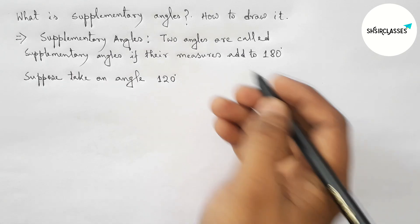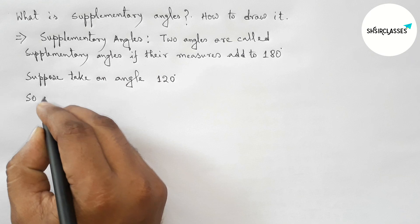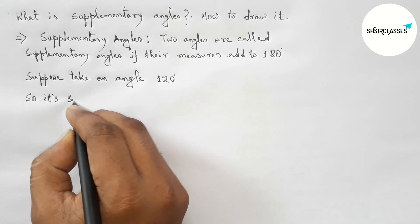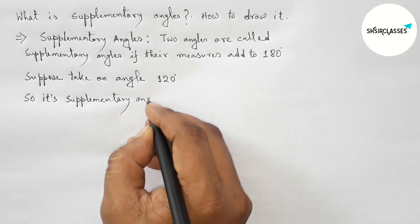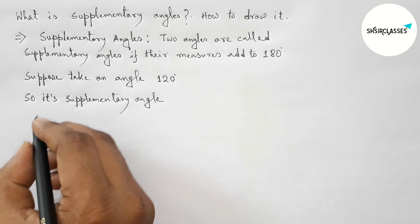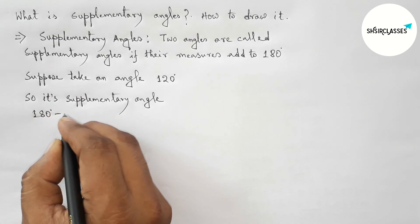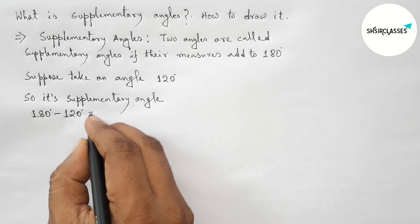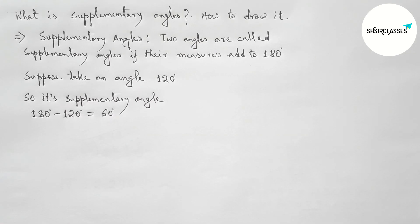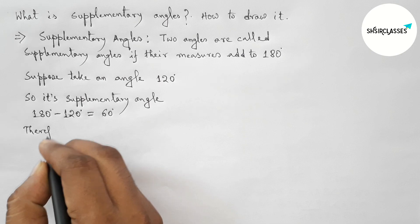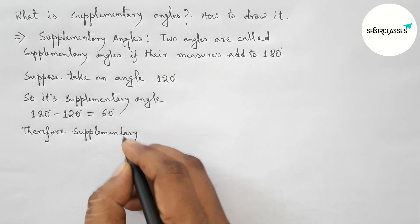Next, suppose we take an angle of 120 degrees. To find its supplementary angle, we subtract 120 from 180: 180 minus 120 equals 60 degrees. So the supplementary angle of 120 degrees is 60 degrees.